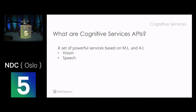Maybe some of you have an Amazon Echo or a Google Home device - you can specify some text in your software and the computer will say it. But the more interesting one is speech to text: we want to talk to the computer and it should understand what we want. That's part of the Speech API.